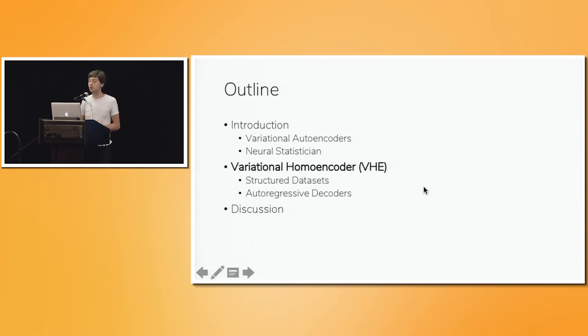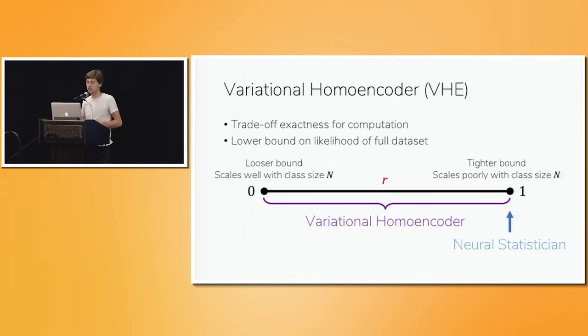And so in this work, we aim to generalize the Neural Statistician in a way that lets us tackle these problems differently. Specifically, we'll construct a family of training objectives parameterized by some value, R, which can trade off between exactness and computation in a different way. At one end of the spectrum, we'll recover the Neural Statistician objective, which is close to the true likelihood, but which can't be used with large classes. And on the other end of the spectrum, we'll have an objective which scales very well to large datasets, but which is much more approximate. Importantly, though, unlike that subsampling trick I just mentioned, every training objective on this spectrum will still be a lower bound on the marginal likelihood of the full dataset.